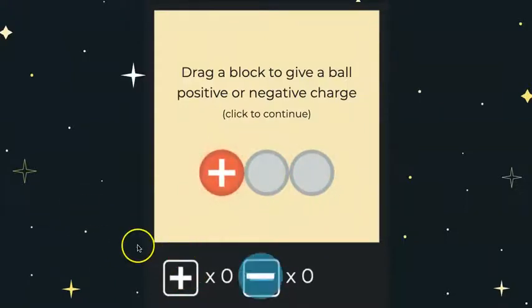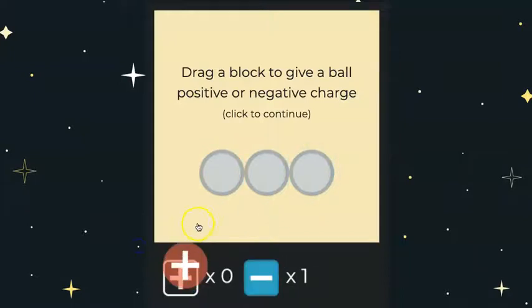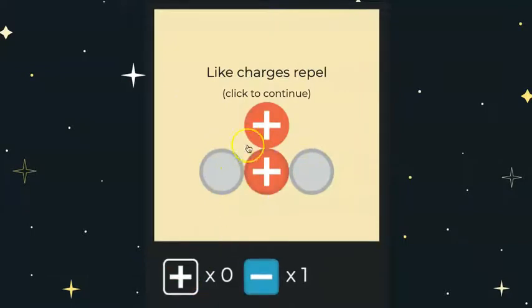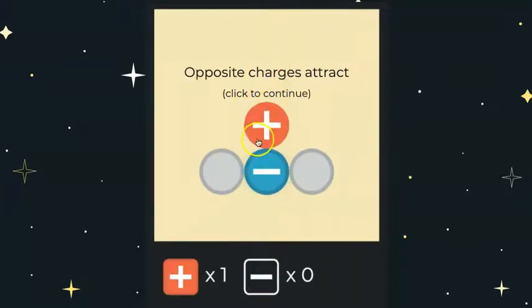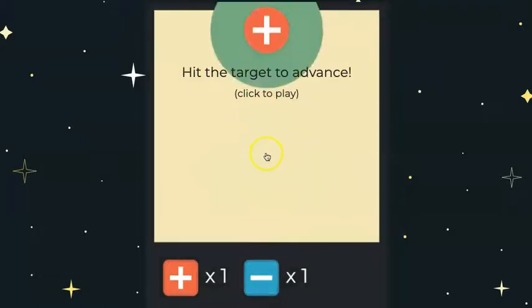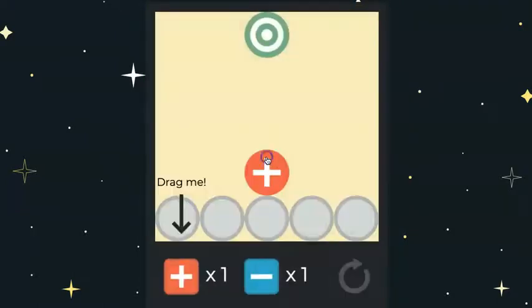The purpose of the game is to give kids an intuitive sense of how objects attract and repel in static electricity, and like charges repel and opposite charges attract. So the goal here is to hit the target to advance, so let's just take a look at a couple of the levels here.